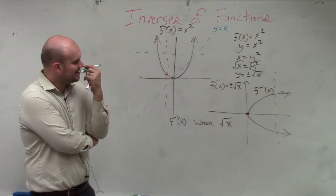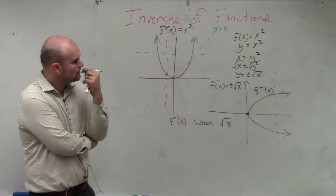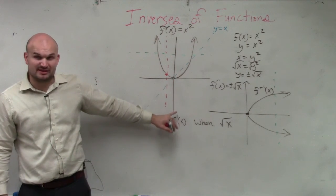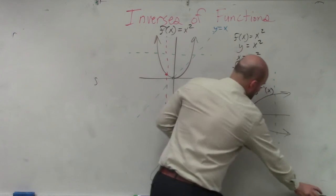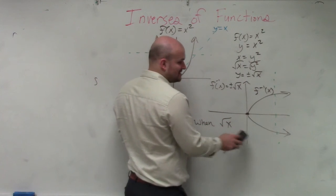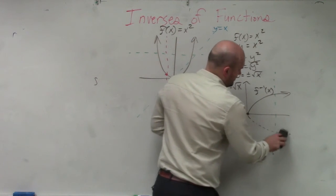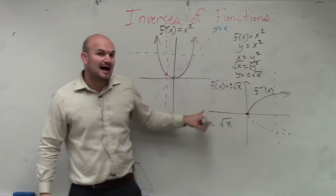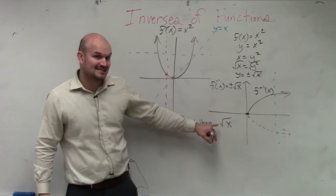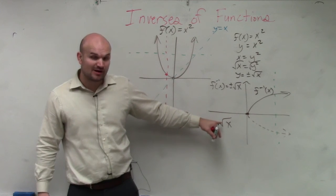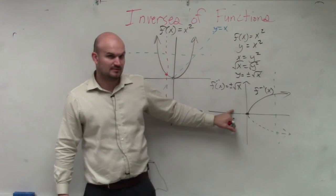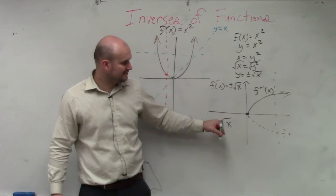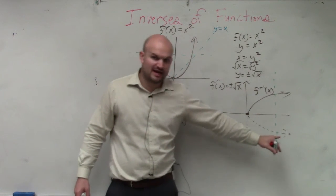So all I want you guys to understand is if I'm just dealing with the positive instead of the negative of my constraint, even though this is still part of it, if I restrict this to only the positive — if I make that dashed so it's no longer part of my restriction — I'm only doing the inverse for the positive square root of x. So I'm only going to graph this portion of it in the first quadrant, where everything's positive.